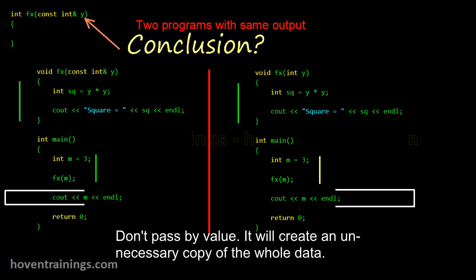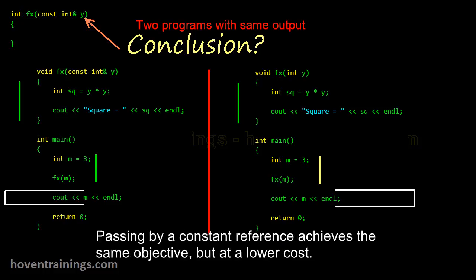It will create an unnecessary copy of the whole data. Passing by a constant reference achieves the same objective, but at a lower cost.